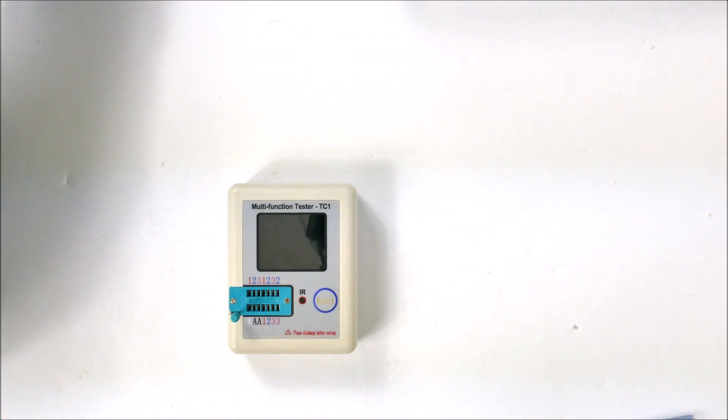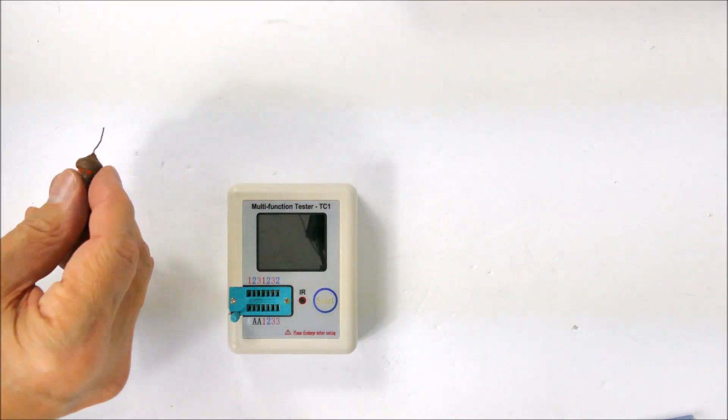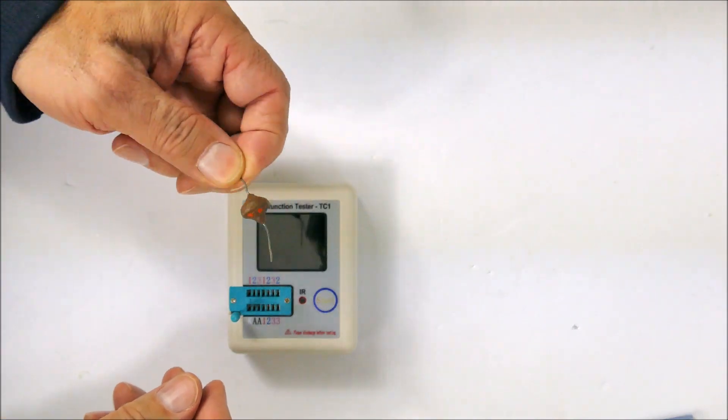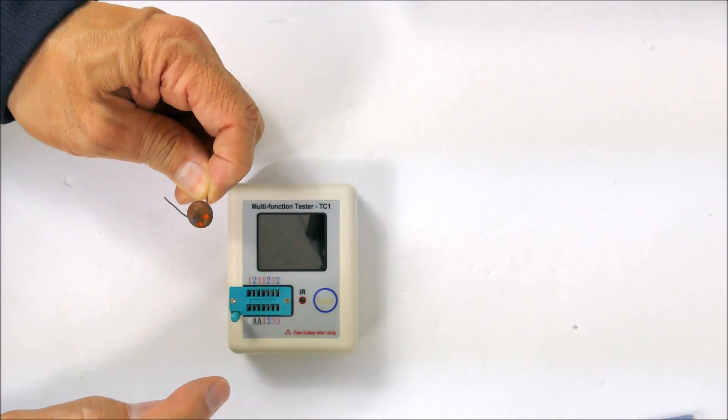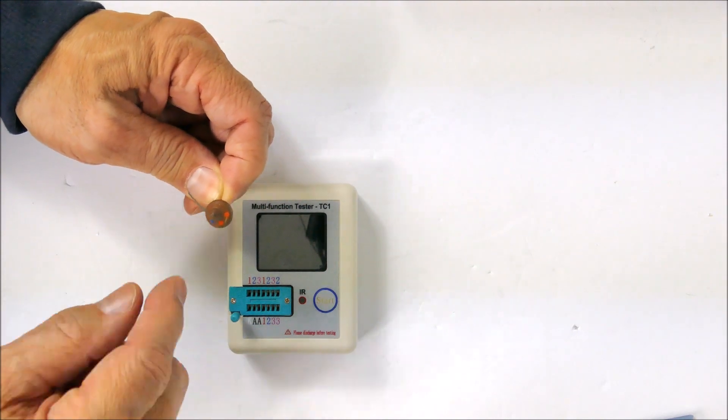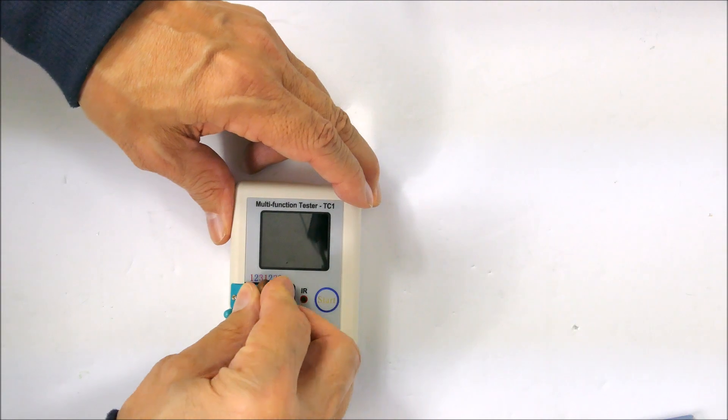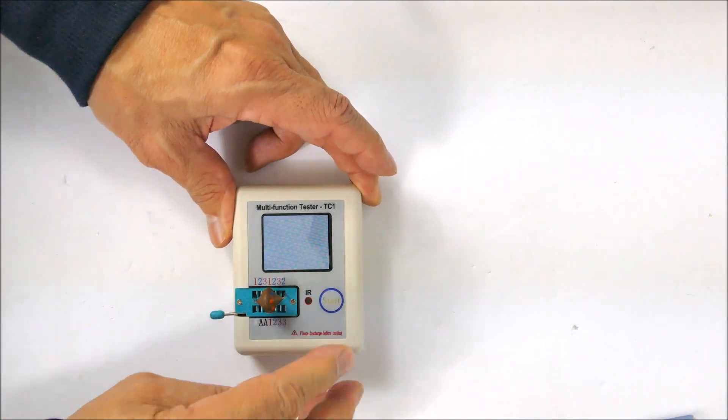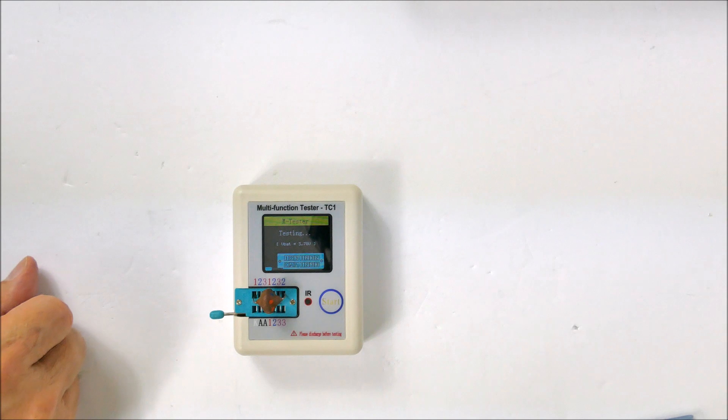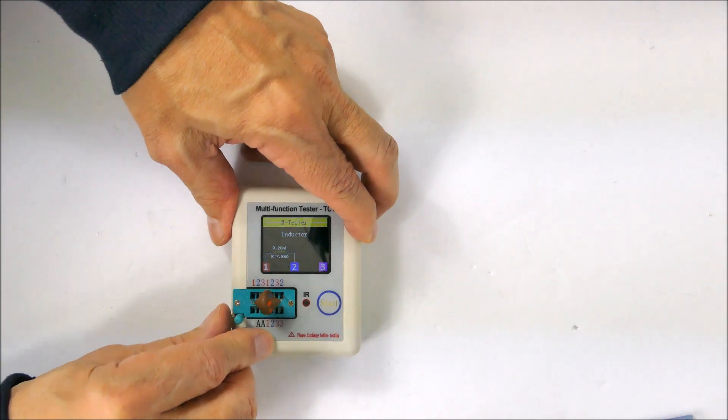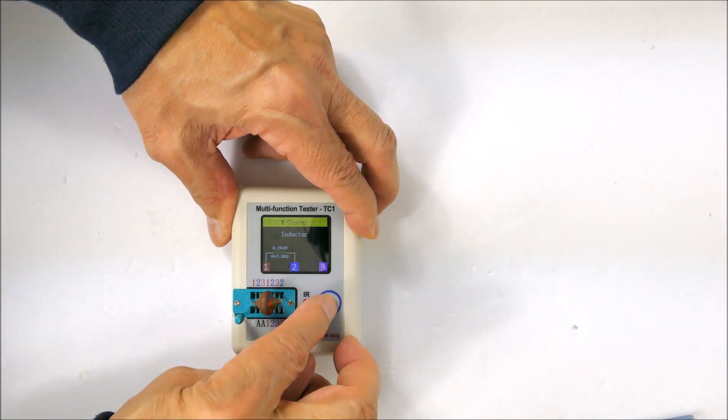Here's a kind of unknown component. It's got some weird color code on it - two orange dots and a blue dot. Let's just see what it says. It says it's an inductor, 0.26 millihenries, and the resistance is 7.88 ohms. So even if you don't know what it is, it'll tell you.